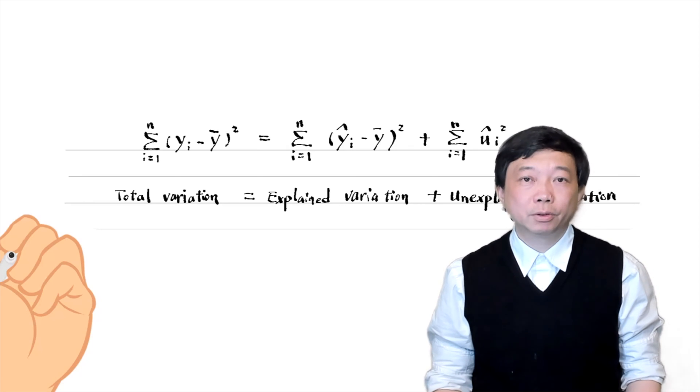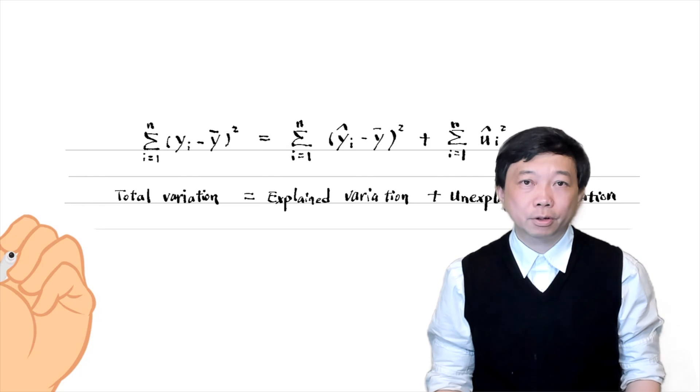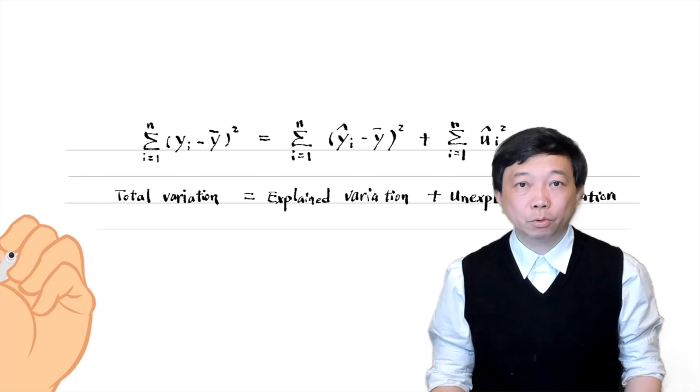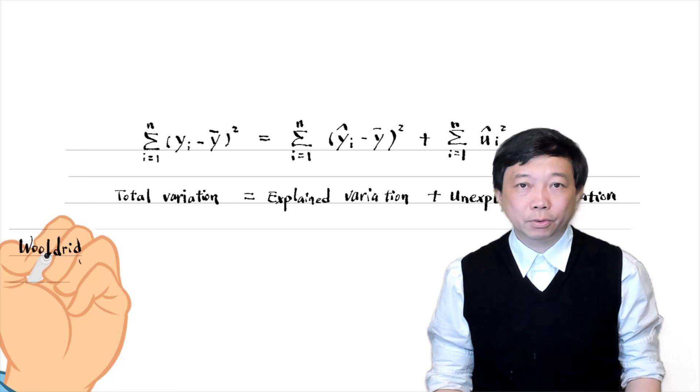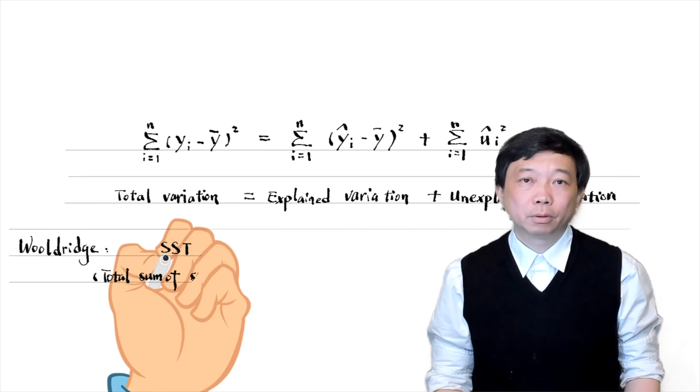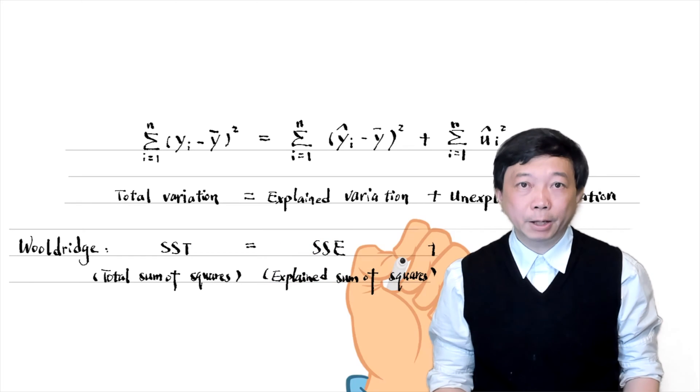The explained variation is the variation in the fitted values yi hat, and the unexplained variation is the variation in residuals mu i hat. The names of the variations are less important. Different textbooks may use different names for the same variation.